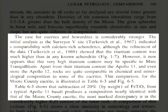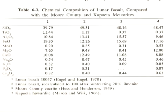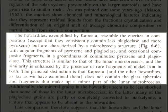This comparison for the Moore County Eucrite is illustrated in Table 6-3 and Figure 6-5. Table 6-3 shows that subtraction of 20% by weight of ilmenite from a typical Apollo 11 sample basalt produces a composition nearly identical with that of the Moore County Eucrite. Here is Table 6-3. As you can see, it compares not only the eucrites but also the Howardite, which the authors indicate also closely resembles Apollo samples in chemical structure. Howardites, exemplified by Capoeita,